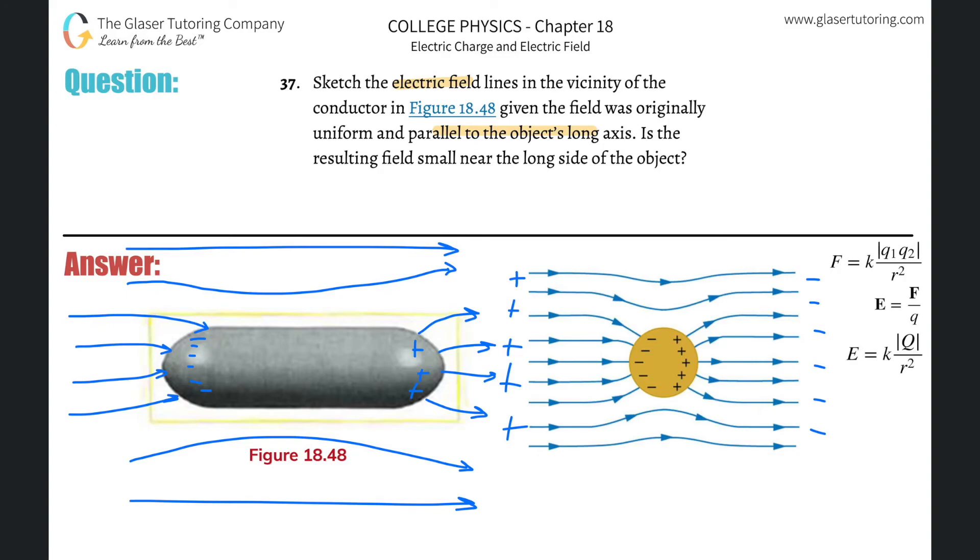All right. And is the resulting field small near the long side? Yes, it is small here near the long side because the density of the field is very low. You can see that in the other picture too.